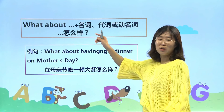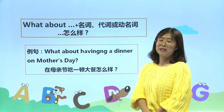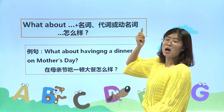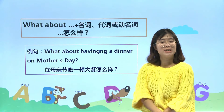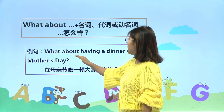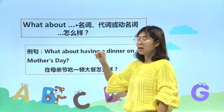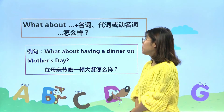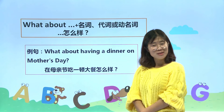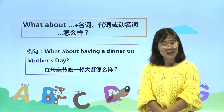我们再看what about。What about跟how about是一样的，也是可以加名词、代词或者是动名词，表示这个事情怎么样呢？我们看这个句子：What about having a dinner on Mother's Day? 这个句子在about后边加的是动名词having，表示在母亲节吃一顿大餐怎么样？